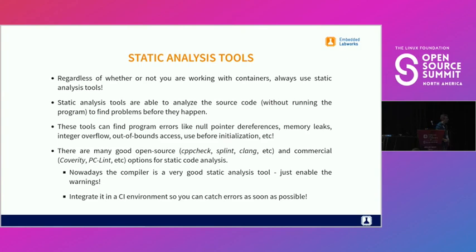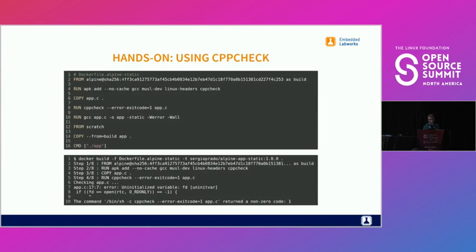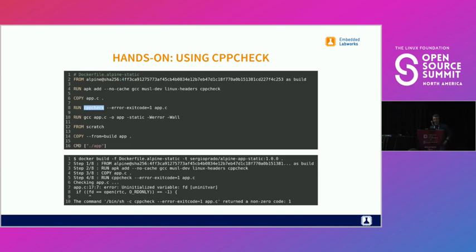Using static analysis tools is very important for any project, containerized or not. Run a linter and enable all compiler warnings, treating them as errors, so you can catch issues at the source code level before building. Integrate this in your CI environment. In this example, I'm integrating CPP check — a static analysis tool for C and C++ — directly in the Dockerfile, running it before building the application.